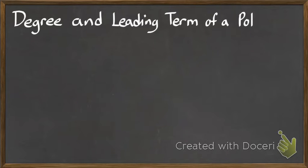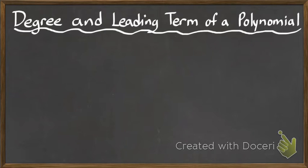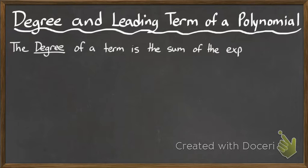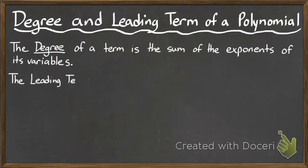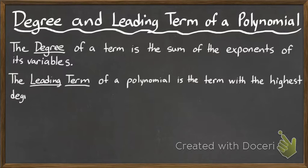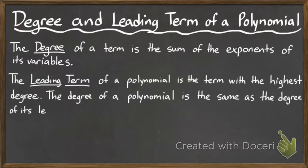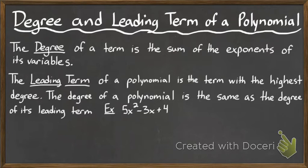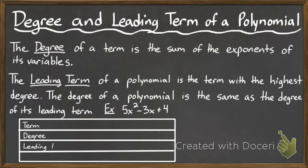Now we want to look at the degree and leading term of polynomials. The degree of a term is the sum of the exponents of its variables. Given this, the leading term of a polynomial is the term with the highest degree, and the degree of a polynomial is the same as the degree of its leading term.